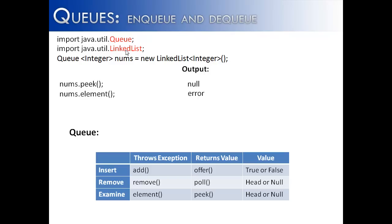So the methods add, remove, and element all would throw an exception for different reasons. Add if it couldn't add an item. Remove if there is no queue. And if you are just trying to examine the head, the element would throw an exception if there is no head.